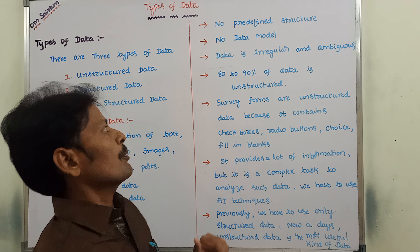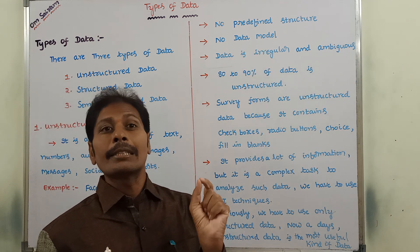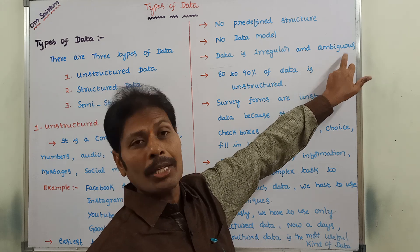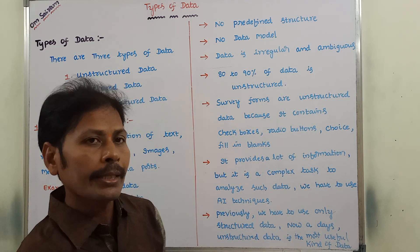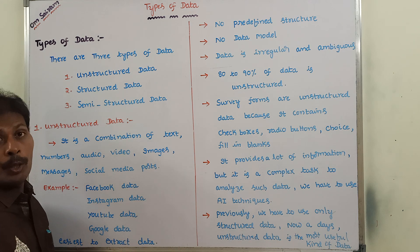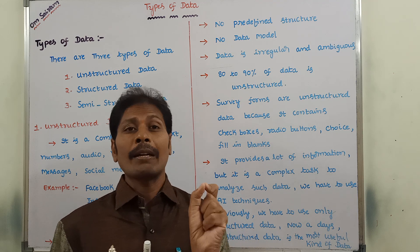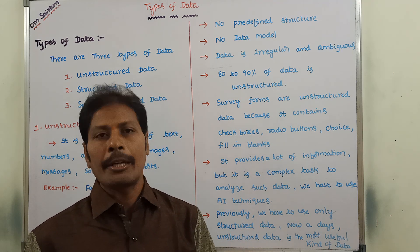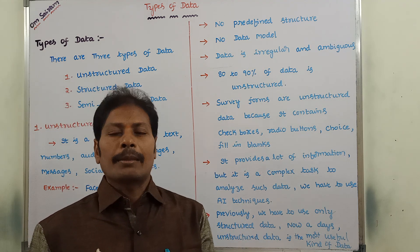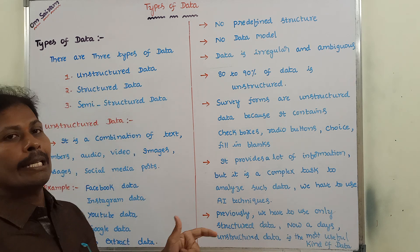Next, data is irregular and ambiguous. Unstructured data does not contain any predefined format, and unstructured data is ambiguous. Ambiguous means the same data is present in Facebook, Instagram, YouTube and Google — which data is correct? We do not know. Because of that reason, unstructured data is ambiguous, meaning there is confusion about which one is correct. Unstructured data is also irregular because it does not follow any predefined format.